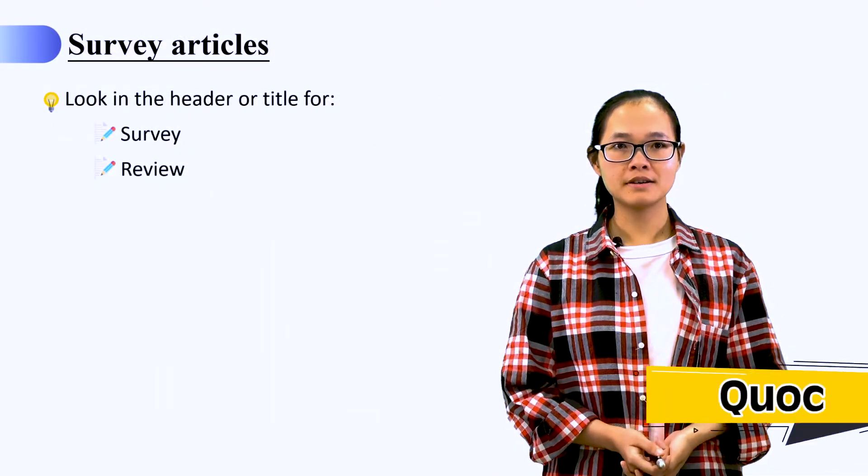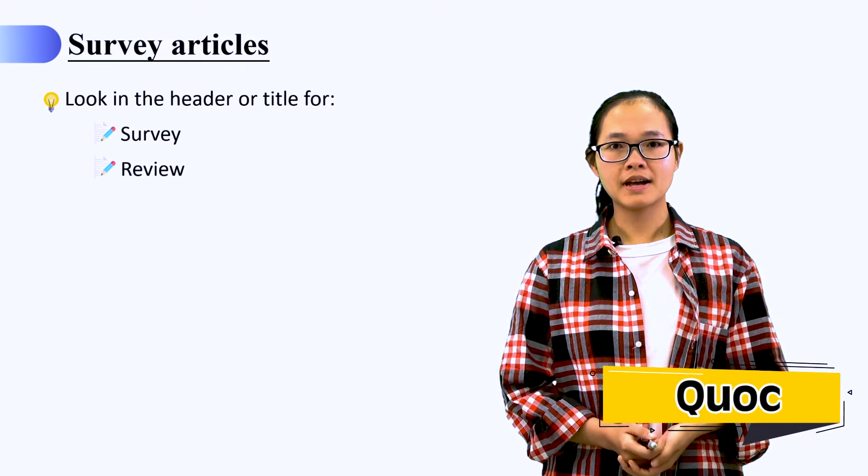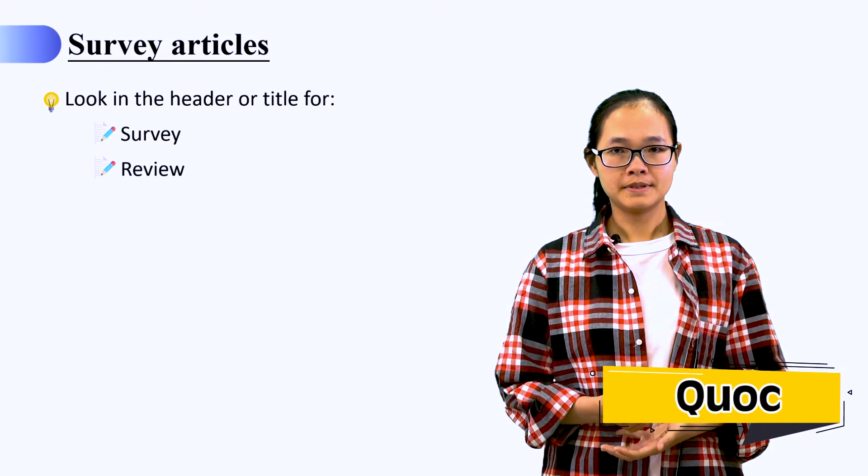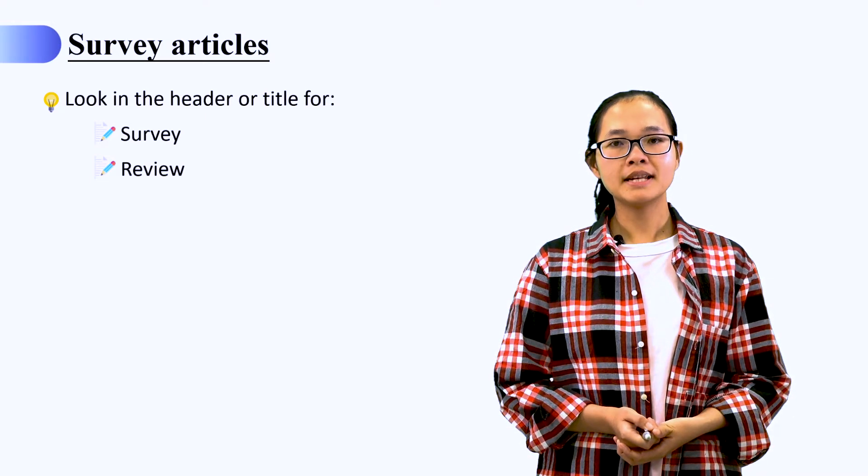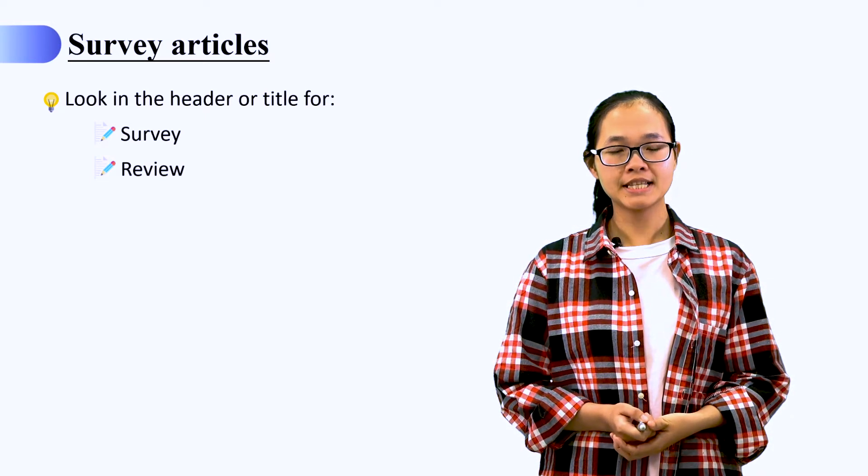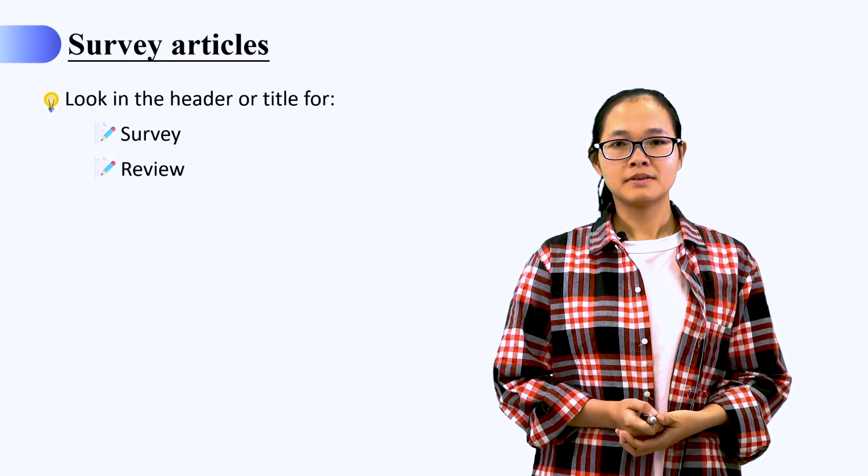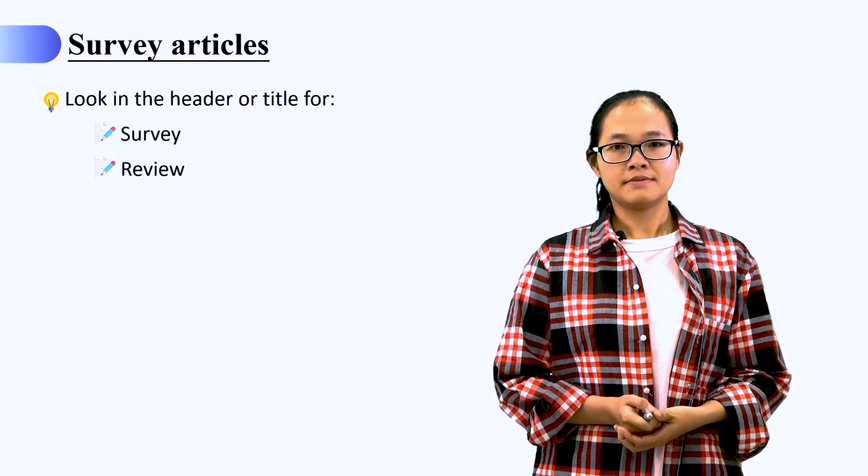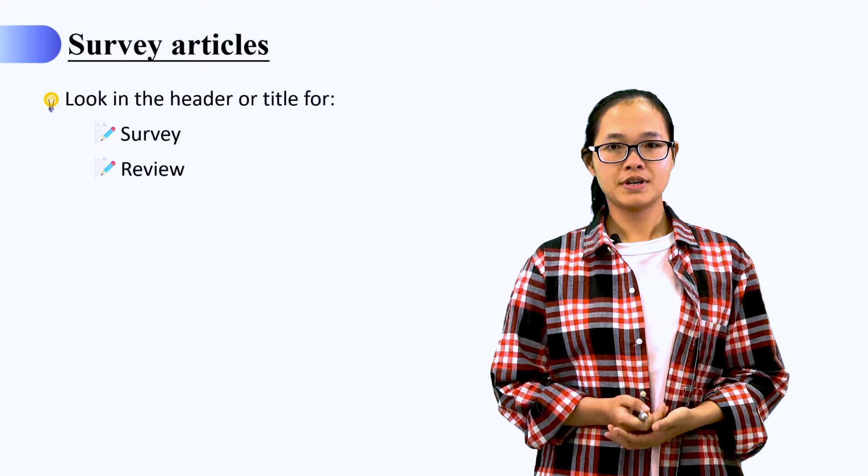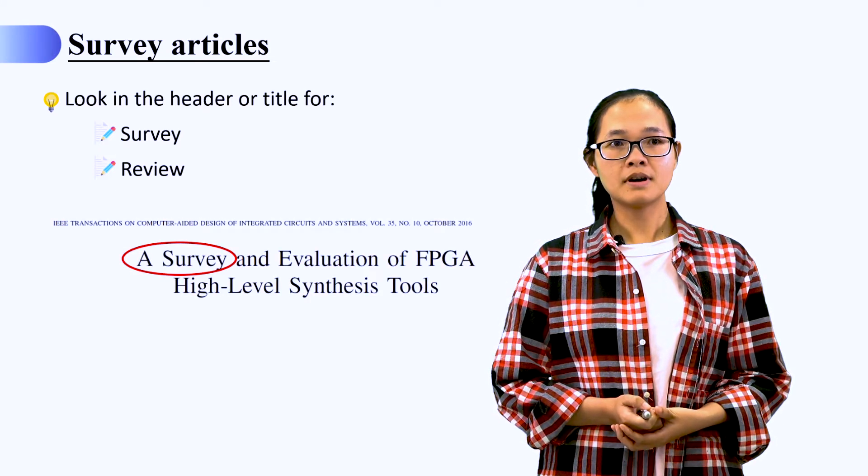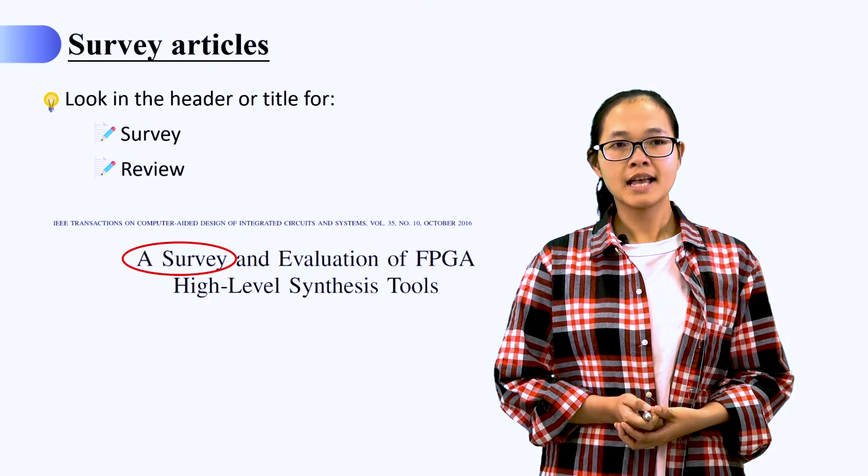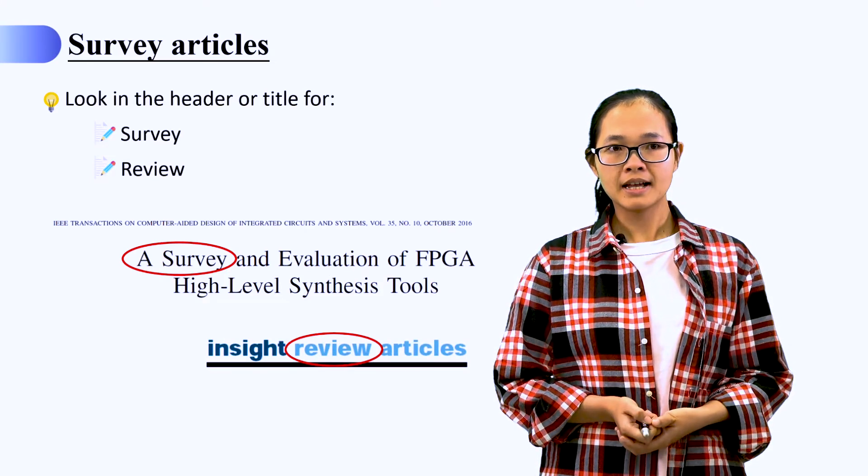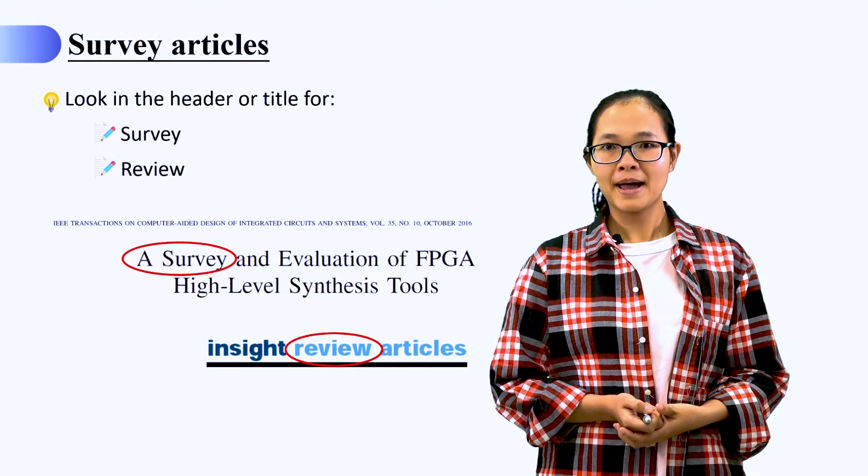Let's talk about survey articles. Review or survey article is a good starting place to find out what have been done in a field and future direction, but they are summarized of many articles rather than detail on one, and so they have different structure. This is an example of a survey article in electrical engineering, and sometimes you can find the description in the header at the top of the page.